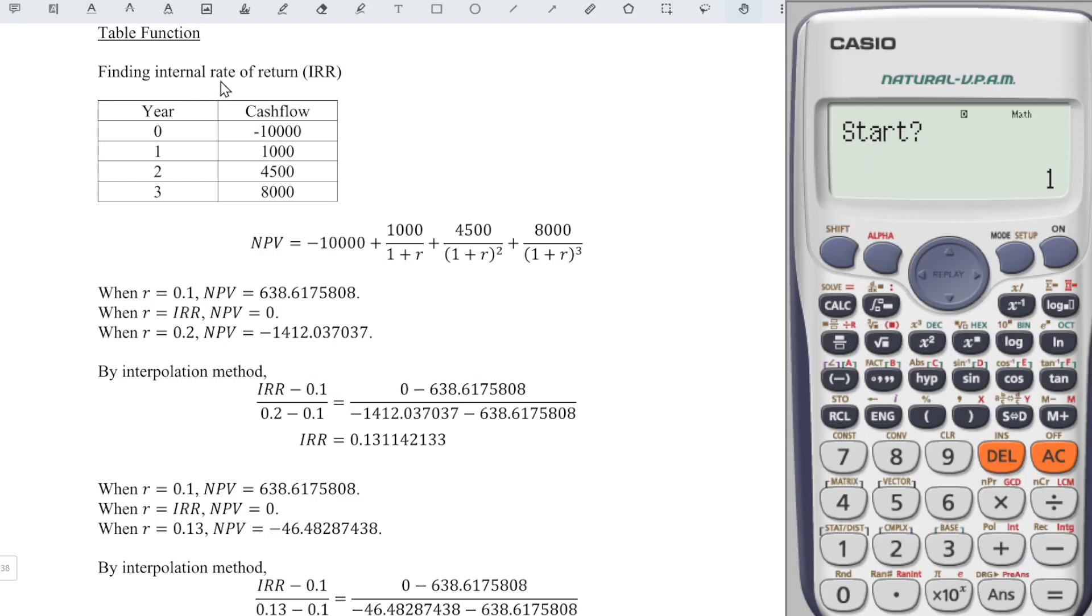We have to bear in mind that the internal rate of return is usually between 0% and 100%, so we start from 0% which is 0, press equal, and we end at 100% which is 1, press equal. The step can increase by every 10%, which means 0.1.